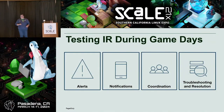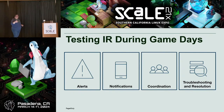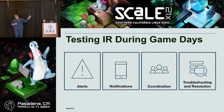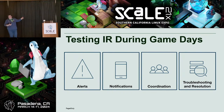When we test incident response during game days, there are a bunch of different things we can make sure are in place — things we don't want falling on the floor when there's a real incident or outage. First is alerts: are we alerting on the right stuff? If I'm putting a slow query onto the database and I'm not getting anyone telling me about it, there are no alerts coming out of that system.